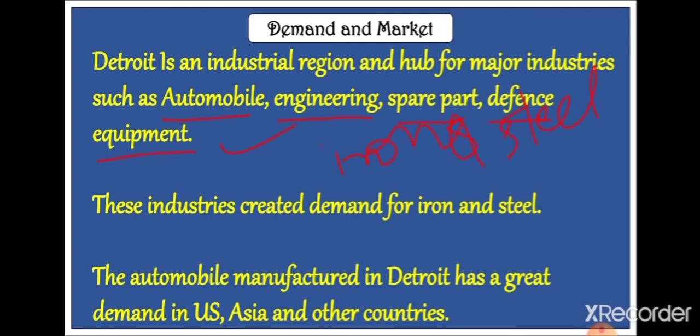So I have explained these two industries — TISCO and Detroit. Tomorrow I am going to explain the IT industry of Bangalore and Silicon Valley: one is in India and the other is in California, USA. This is all for today. Please read the chapter, as this chapter is more for reading. I have taken out the major points and explained them, but you will understand more when you read the chapter. Thank you students.